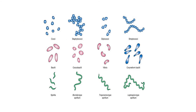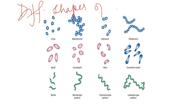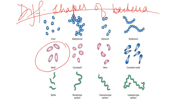Bacteria grouped under this kingdom have different shapes. Some are long and rod-like, which is called bacillus - you can see these are elongated and rod-shaped. Some are spherical or round in shape, which is called cocci - you can see these sphere-shaped structures. So bacillus means long and rod-shaped, and coccus or cocci means round or spherical.